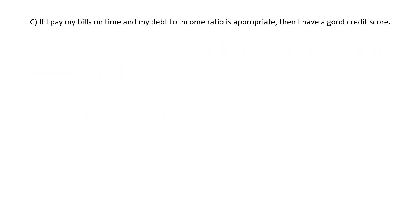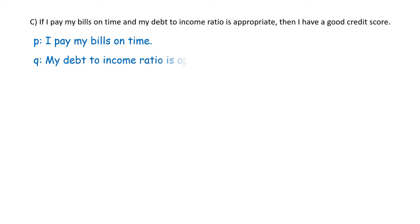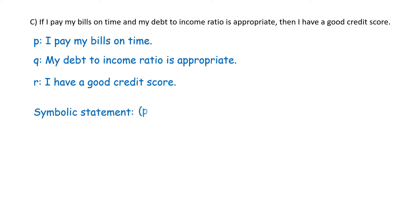Part C: 'If I pay my bills on time and my debt to income ratio is appropriate, then I have a good credit score.' We have three simple statements. Let P be 'I pay my bills on time,' Q be 'my debt to income ratio is appropriate,' and R be 'I have a good credit score.' Expressed symbolically: if P and Q then R.